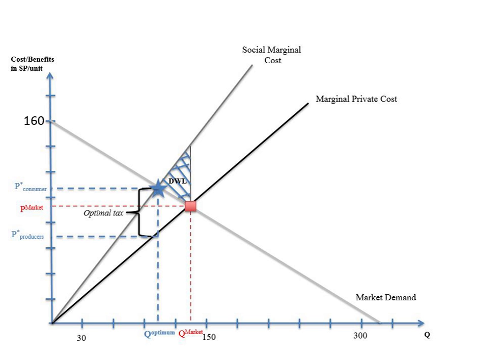The star in the diagram, or the point where the new supply curve and the consumer demand intersect, represents the socially optimum quantity Q optimum and price. At this social optimum, the price paid by the consumer is P consumer and the price received by the producers is P producer.